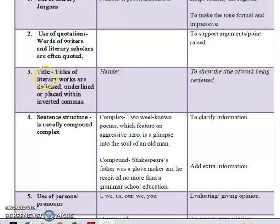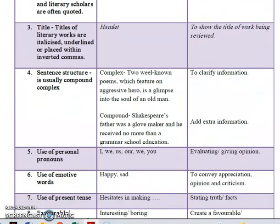Moving on, you have titles. Titles of literary works are italicized, underlined, or placed within inverted commas. That is an example where the title is italicized — so you have Hamlet. This is to show the title of the work being reviewed, and it's also for referencing purposes. You are clearly aware of what is being referred to — which book, which play, or which work is being referred to.